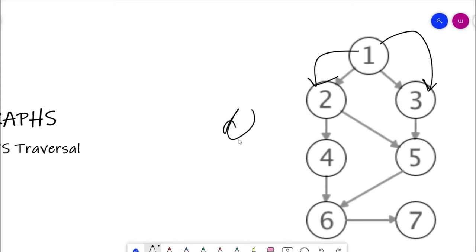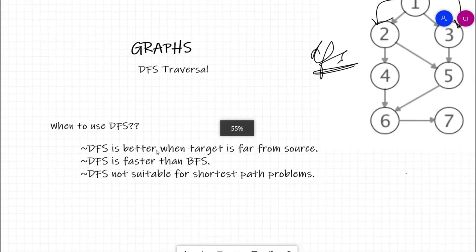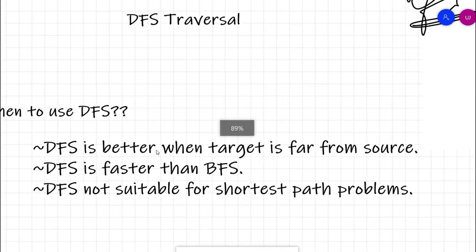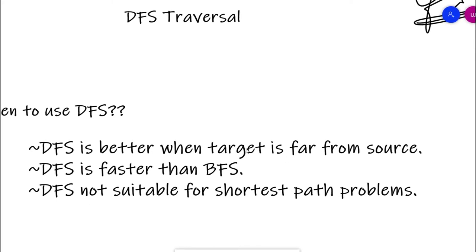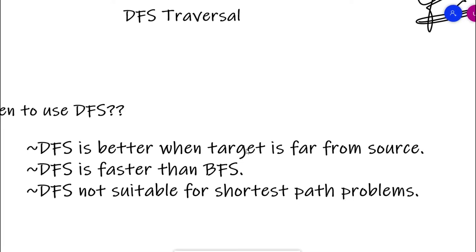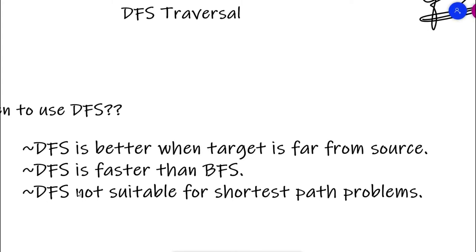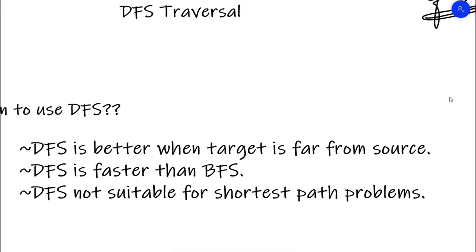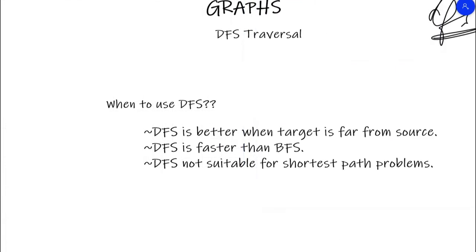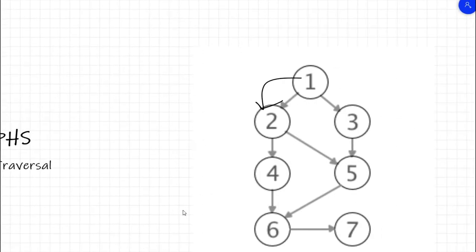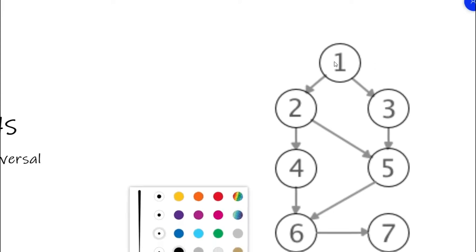The next reason is that DFS is faster than BFS, but it also depends on whether the target is near or far — this point is related to the first. If the target is far from the source then DFS is faster than BFS. Next: DFS will not be used for shortest path problems. Let's take an example. If you want to find the shortest path between node 1 and node 5, let me show you quickly.